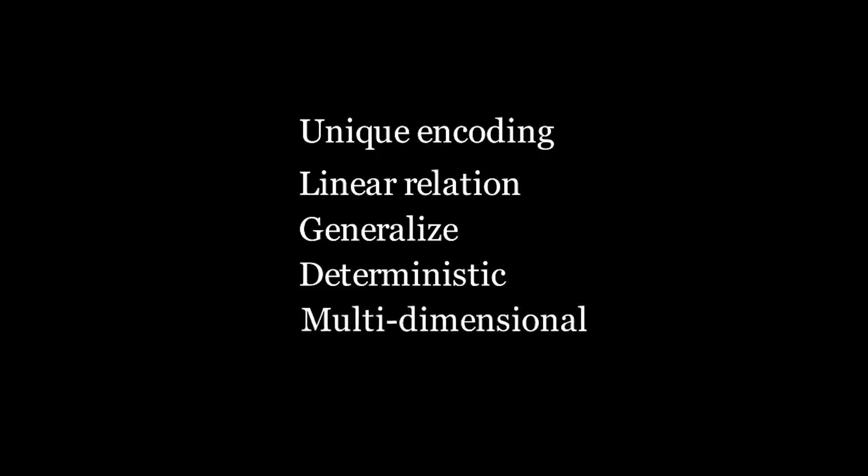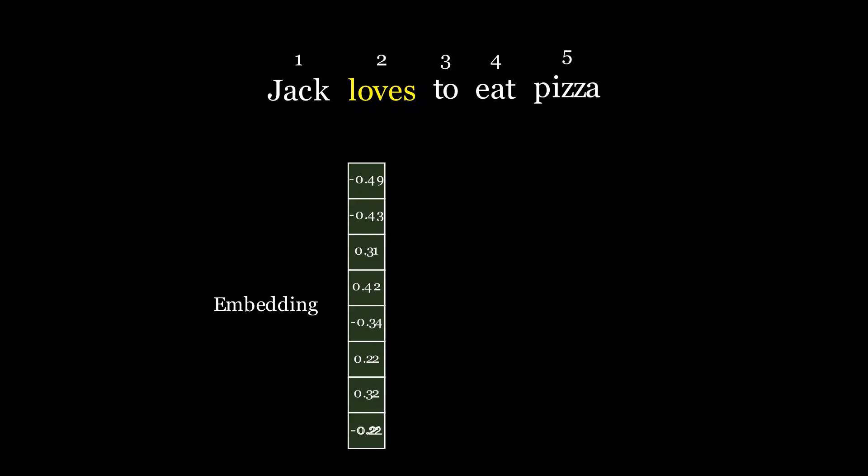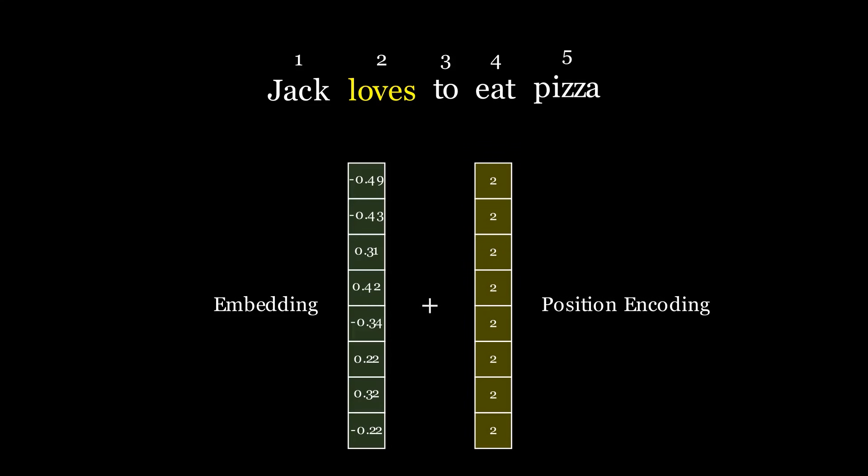From listening to all these rules, the simplest and most obvious PE that comes to mind is integer encoding or simply adding the location of the word. Let us see where this will work and where it will fail. If we begin with our previous example, Jack loves to eat pizza, take the word loves, convert it into its respective embeddings, then add the position to it. We can see that it works quite well.